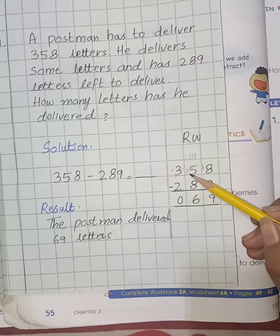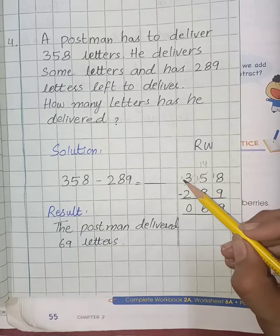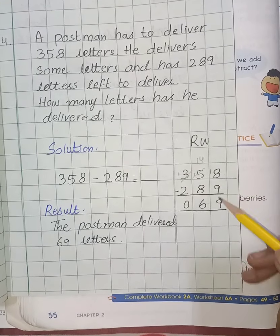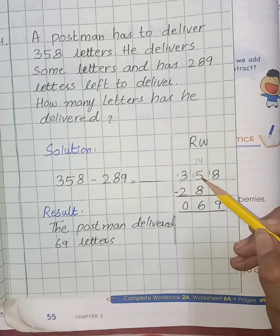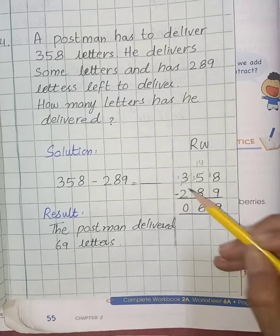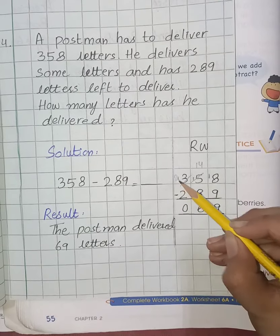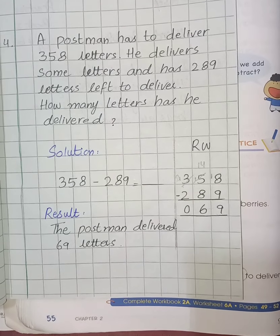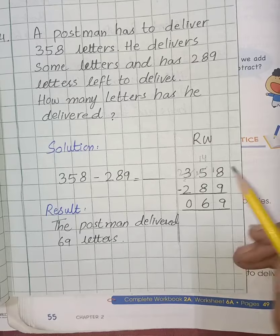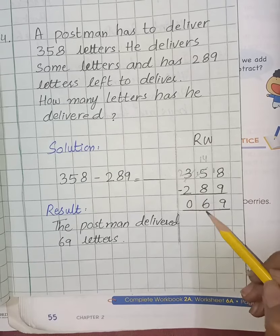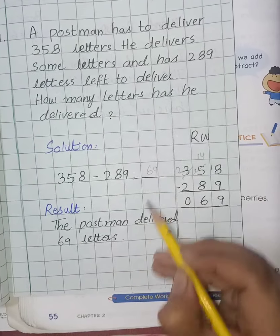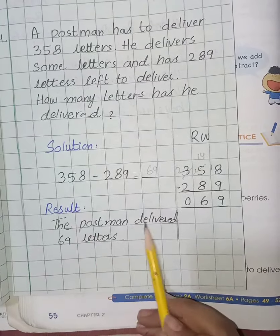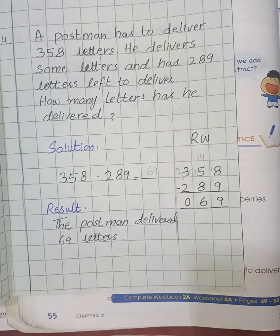18 minus 9 is 9. 14 minus 8 is 6. 2 minus 2 is 0. So the answer is 69. It means the postman delivered 69 letters.